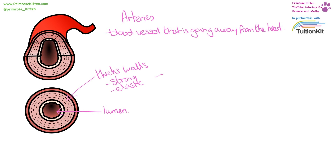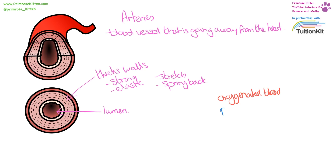This allows them to stretch and to spring back into shape when different quantities of blood are being pumped around the body. Since arteries are going away from the heart, they generally carry oxygenated blood. The one exception is the pulmonary artery, which goes from the heart to the lungs where it picks up the oxygen, and this carries deoxygenated blood.